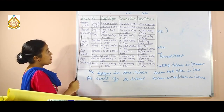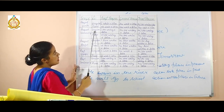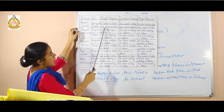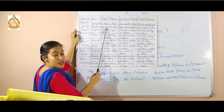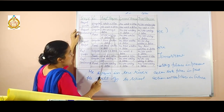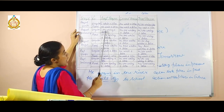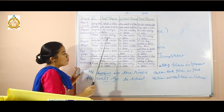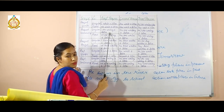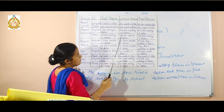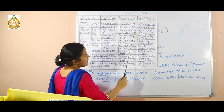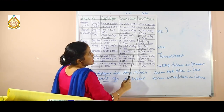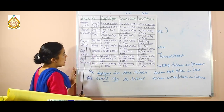Next comes present continuous tense. Here, 'I am writing a letter.' We write verb first form plus '-ing'. In present continuous tense, the structure is: first person — 'I am writing a letter.' Second person — 'You are writing a letter.' Third person — 'He or she is writing a letter.'